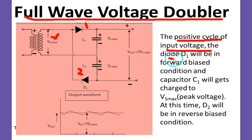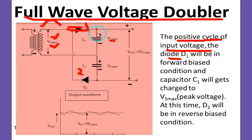When the positive half of the input comes, diode D1 acts as a short circuit, so capacitor C1 will get the charge — C1 gets charged to Vs maximum, and this voltage appears across the capacitor. At the same time, the N of diode D2 is at positive, meaning D2 is reverse biased and acts as an open circuit, so nothing happens to capacitor C2.